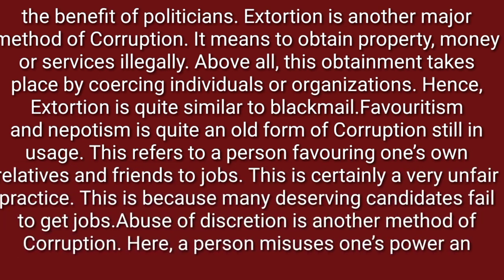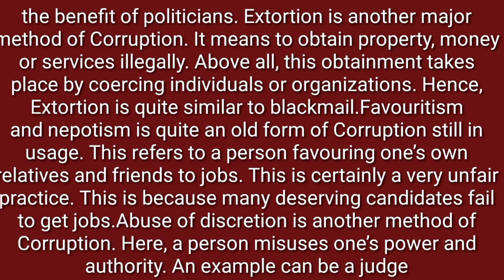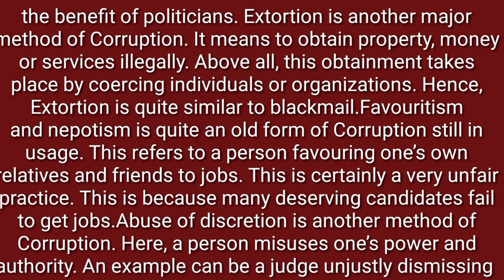Favoritism and nepotism is quite an old form of corruption still in use. This refers to a person favoring one's own relatives and friends for jobs. This is certainly a very unfair practice, because many deserving candidates fail to get jobs. Abuse of discretion is another method of corruption — here, a person misuses their power and authority. An example can be a judge unjustly dismissing a criminal's case.